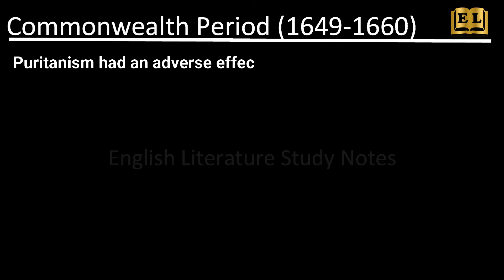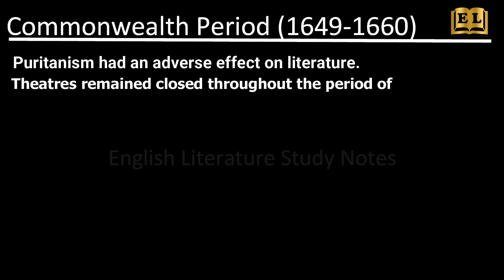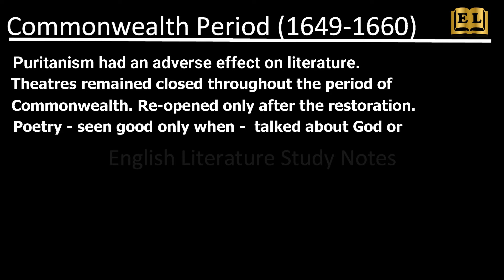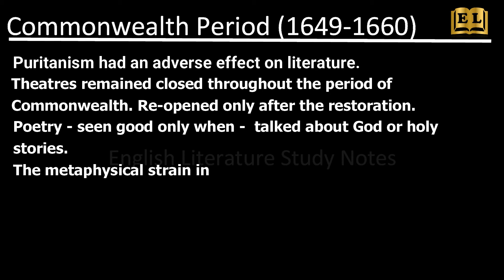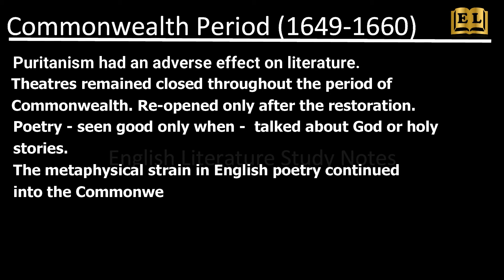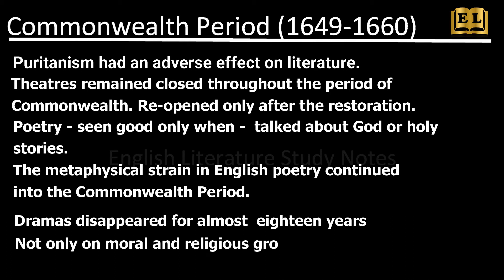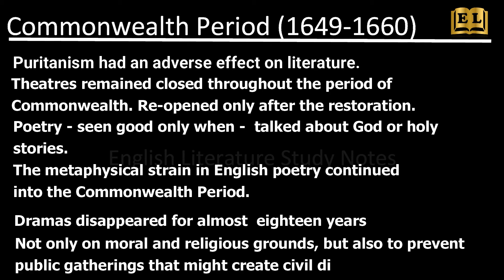Puritanism had an adverse effect on literature. Theatres remained closed throughout the period of the Cromwellian Commonwealth and reopened only after the restoration of Charles II in 1660. Poetry was seen as good only when it talked about God or holy stories. The metaphysical strain in English poetry continued into the Commonwealth period. Drama disappeared for almost 18 years after the Puritans closed the public theatres in 1642, not only on moral and religious grounds but also to prevent public gatherings that might create civil disorder.